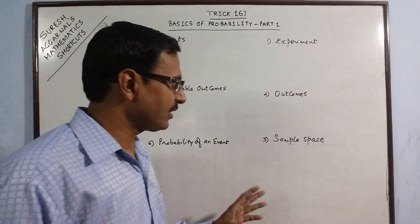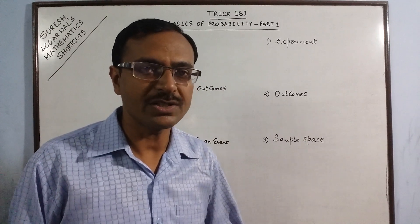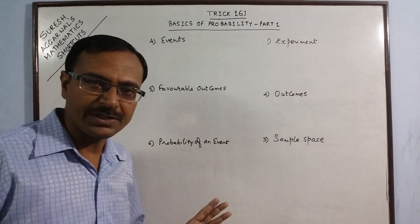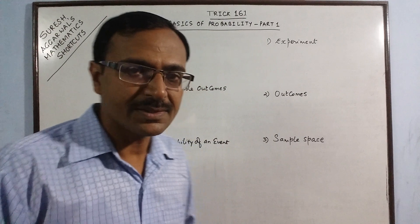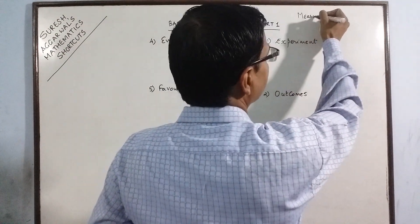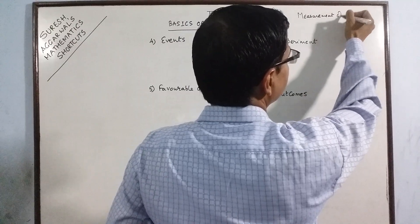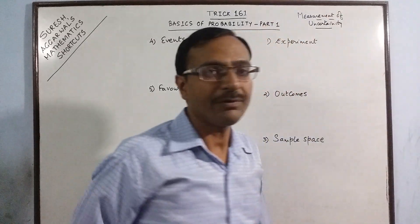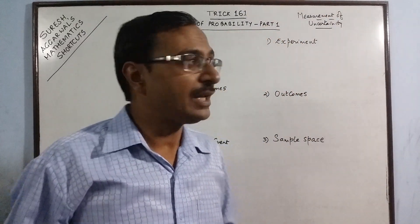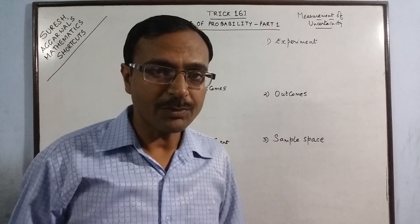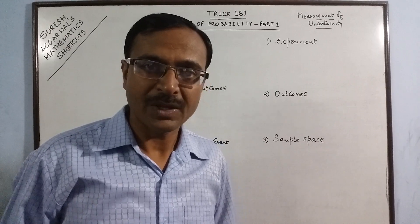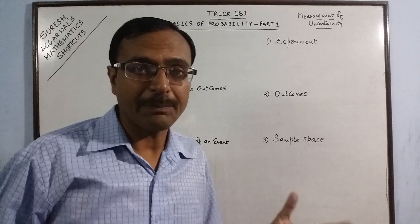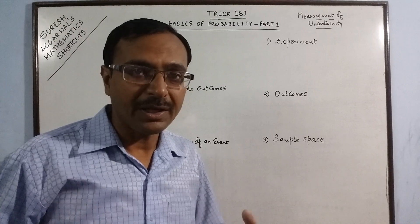When we start understanding something from the base, we need to understand some of the terms associated with this important topic. Today I am going to tell you six terms which lead to the concept of probability. Probability is essentially about measuring uncertainty. Life is full of uncertainties and we have to take decisions in conditions which may or may not be favorable to us. If we have knowledge of probability, decision making becomes easier — we can be logical and mathematical rather than just guessing outcomes.